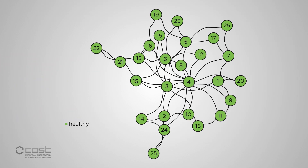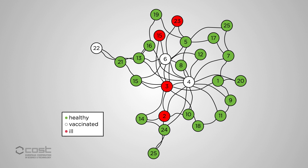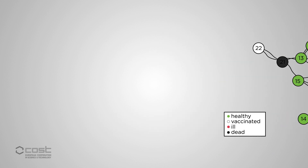This means that vaccinating a randomly selected contact of a randomly selected person will be more likely to hit the hub node and extinguish the epidemic. This is particularly true for preferential attachment-like social networks, and was shown to work a few years ago when a group of college students was tracked during a flu epidemic.